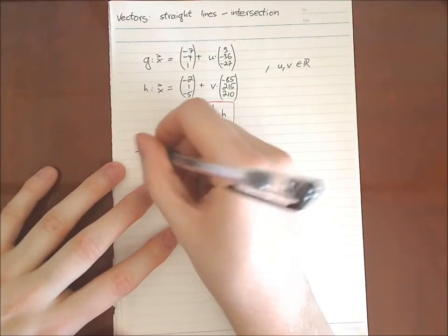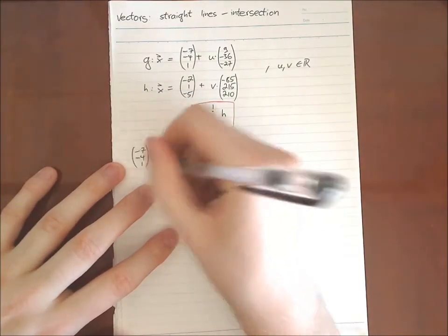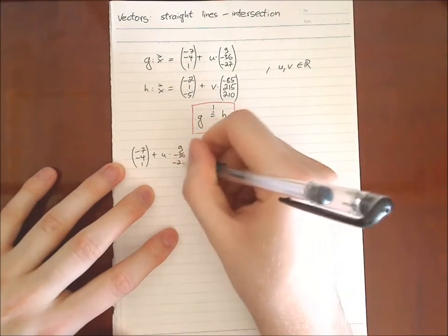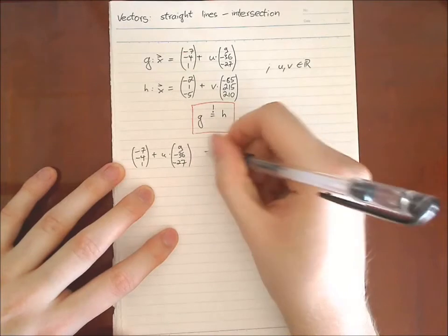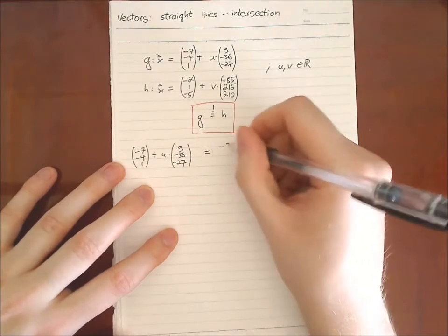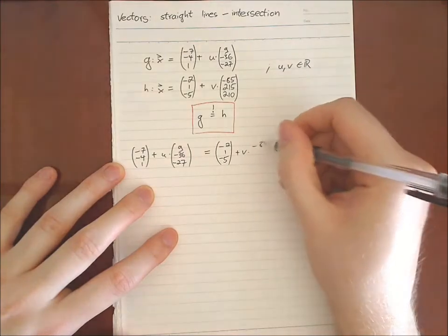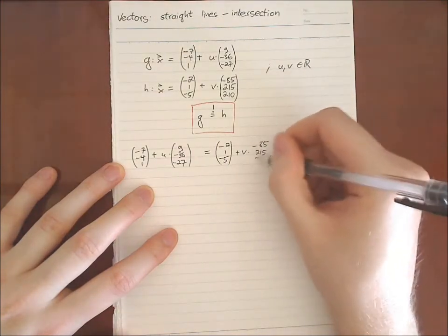So we just start, so it's minus seven, minus four, one, plus u times nine, minus 36, minus 27, equals minus two, one minus five, plus v times minus 85, 215, 210.